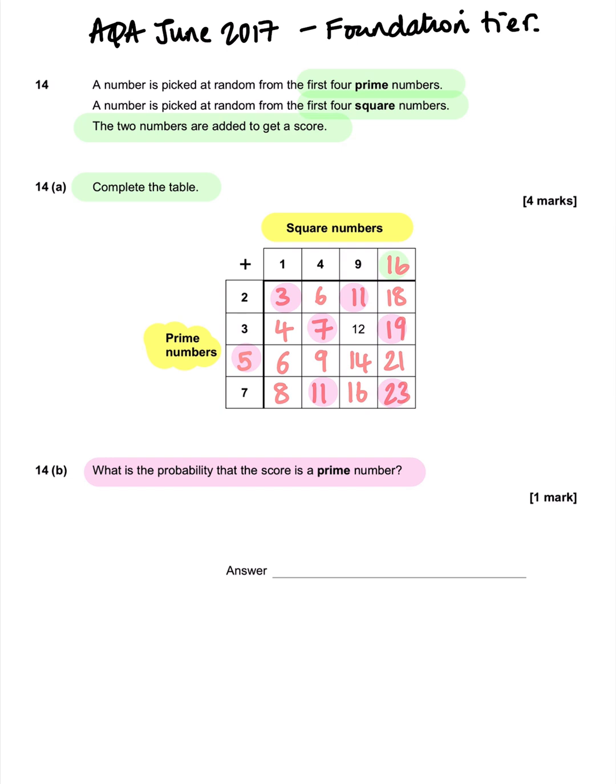So we have, on the numerator of our probability, 1, 2, 3, 4, 5, 6 out of 4, 8, 12, 16 in total. You don't need to simplify the fraction for a probability; it doesn't ask you to.